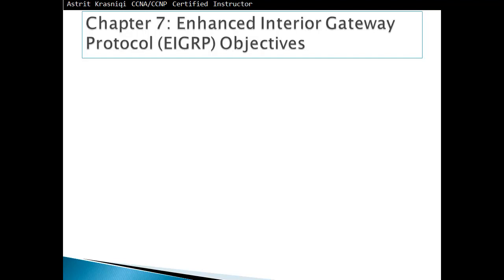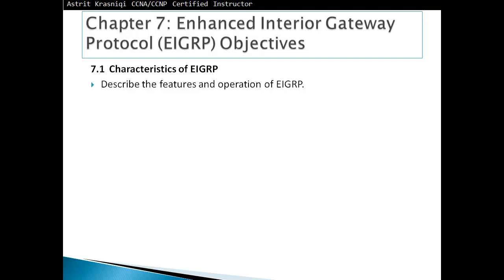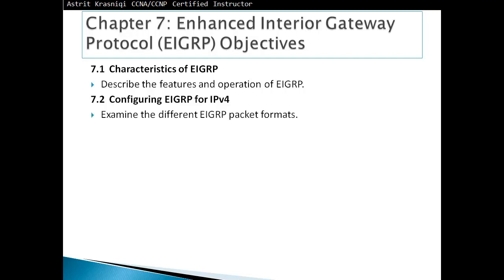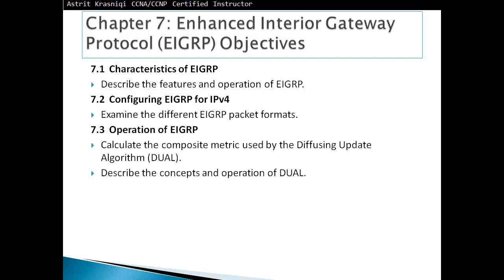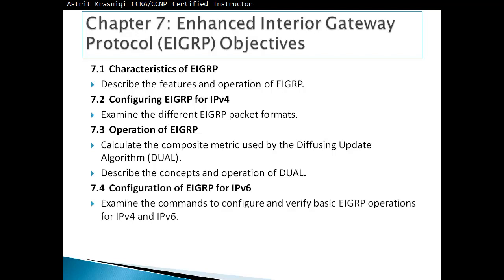Objectives for Chapter 7 Enhanced Interior Gateway Protocol EIGRP: Section 7.1 covers Characteristics of EIGRP, where we describe the features and operations of EIGRP. Section 7.2 covers Configuring EIGRP for IPv4 and examines different EIGRP packet formats. Section 7.3 covers Operations of EIGRP, calculating the composite metric used by DUAL. Section 7.4 covers configuring EIGRP for IPv6, examining commands to configure and verify basic EIGRP operations for IPv4 and IPv6.